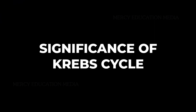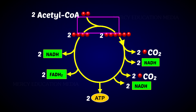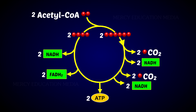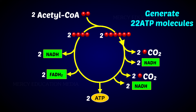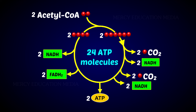Two molecules of acetyl coenzyme enter into the Krebs cycle, which on subsequent oxidation generate 6 molecules of NADH2 and 2 molecules of FADH2. When these enter into the electron transport system, 22 ATP molecules are generated. Additionally, substrate level phosphorylation directly yields 2 ATP molecules. Thus, every 2 molecules of acetyl coenzyme entering the Krebs cycle generate 24 ATP molecules.